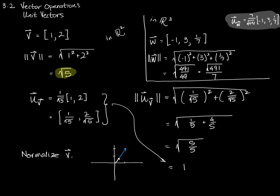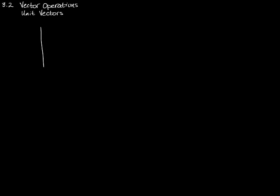There's one more important notation to cover. If I draw a Cartesian grid with x and y axes, I can draw a vector from the origin to the point (1, 0), represented as the vector [1, 0]. Similarly, a vector going to (0, 1) can be represented as [0, 1]. These are special vectors exactly in the x and y directions.